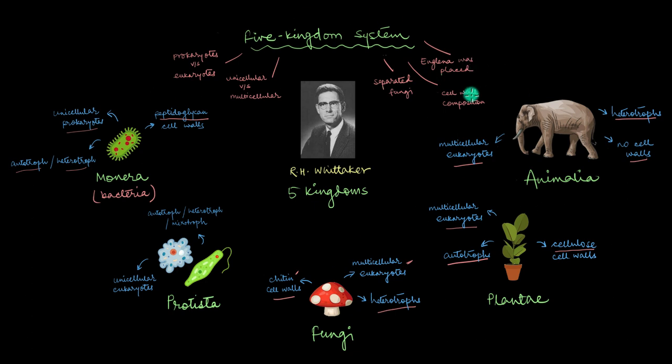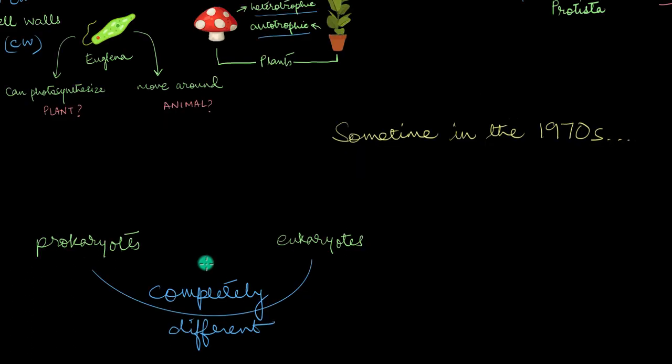The five kingdom classification was a very well made system back in the day. But then the 1970s rolled in and that decade came with some mind-boggling revelations. Earlier, we used to think that prokaryotes and eukaryotes are completely different from each other. But then multiple studies were carried out in the 1970s and they revealed that there are some special bacteria that have genes and enzymes which are more closely related to that of the eukaryotes.